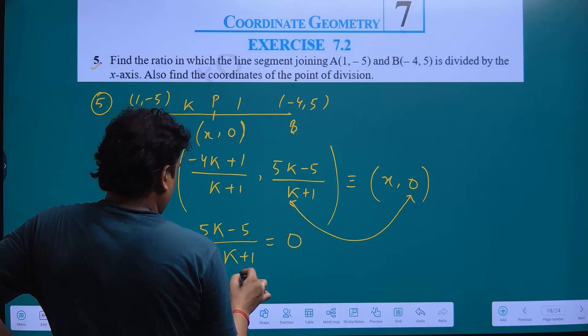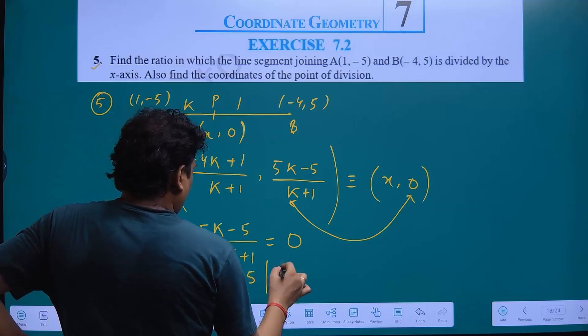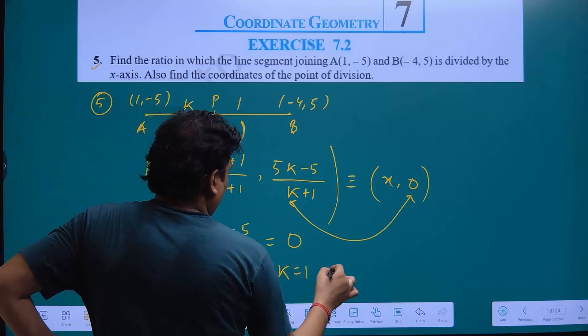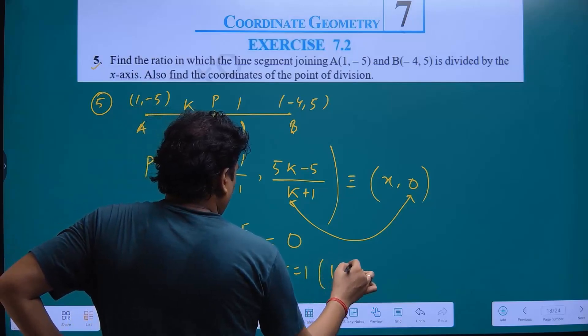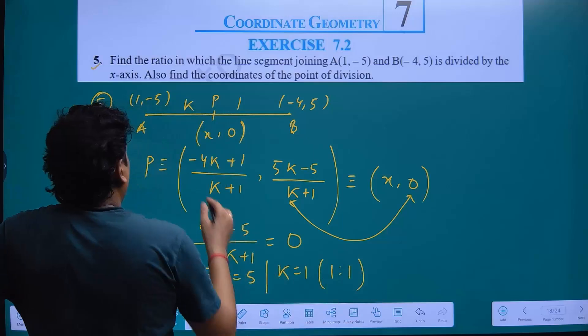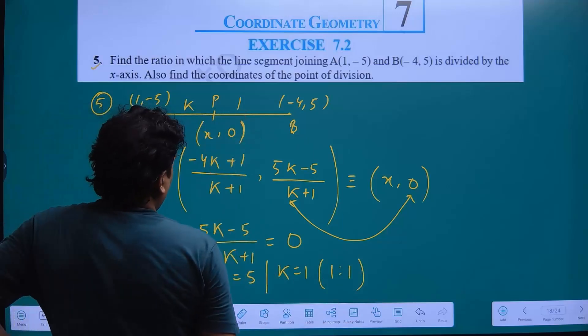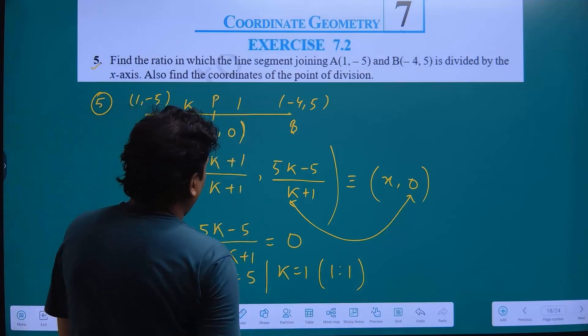So 5K is equal to 5, K is equal to 1. That means 1 is to 1, it's being divided in equal parts. Now we need to find the coordinates.